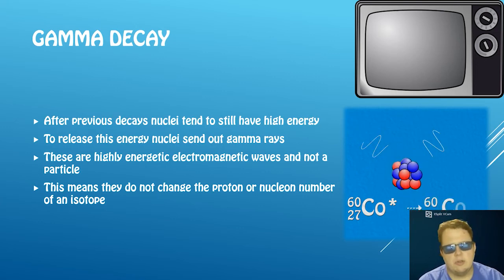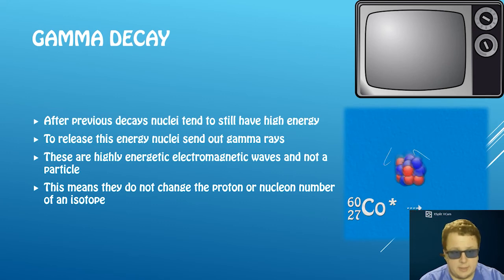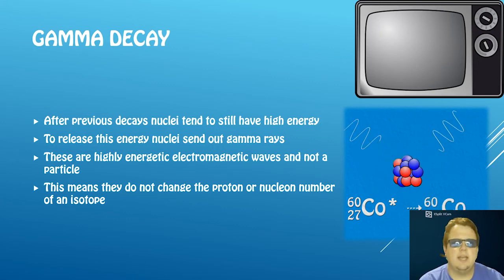Now we don't have any particles change, so we don't have any change in our proton or nucleon numbers when we have gamma decay. So here is cobalt-60, very common gamma emitter, and you can see before the decay it's got lots of energy, after the decay it's lost that energy.